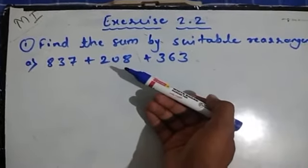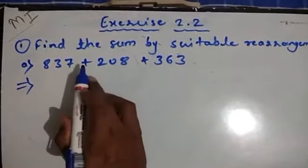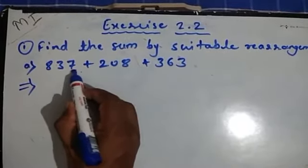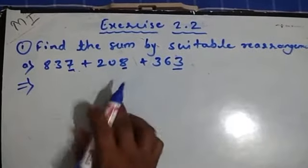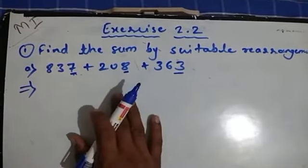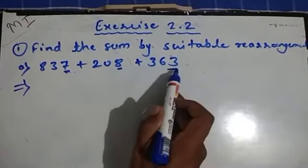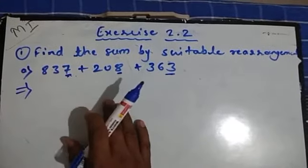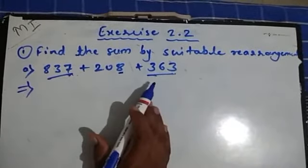In suitable rearrangement, what we actually have to do is: see the last digit — the ones digit — of these numbers. Here we have 7, here we have 8, and here we have 3. To decide which two numbers to add first, look at the ones digits. 7 and 8 give 15, which makes the problem a bit difficult. Instead, 7 and 3 give 10, and wherever we get 10 or 100, those are very good for addition. So we choose those two numbers first.